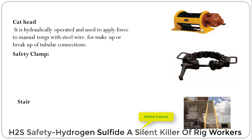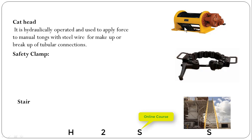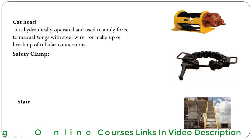Cat head. It is hydraulically operated and used to apply force to the manual tong with a steel wire for making up or breaking out a tubular connection. The cat head has a steel wire wrapped on its drum, which is hydraulically operated, and the wire is connected to the manual tong. So when we need to tighten or break a connection, we can do so with the help of the cat head.